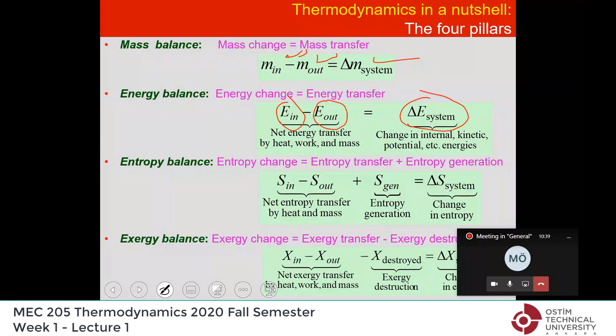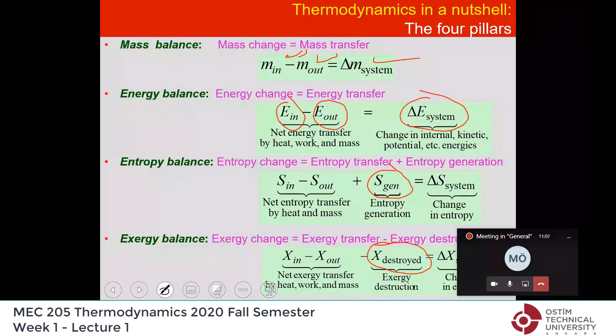What you probably don't know is entropy and exergy — they are properties associated with the second law of thermodynamics. Entropy and exergy are not conserved: entropy is generated, and you see the entropy generation term here. Exergy is destroyed, and you see the exergy destruction term. So they are different from mass and energy, which is the reason some people have difficulty understanding entropy and exergy. But when we get to it, you will see that it is not really that hard.